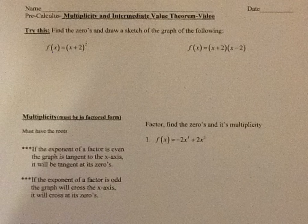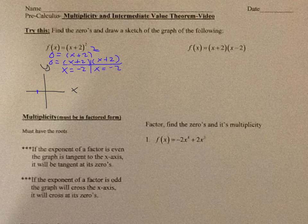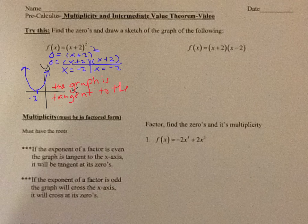It says to find the zeros, so this has to be equal to zero. x plus 2 squared is really 0 equals (x+2)(x+2). When I set them equal to zero, I get x equals negative 2 and x equals negative 2. So notice I have the same exact roots — equal roots. On your graph, at negative 2, it's tangent to the x-axis. There's only one root, only one zero. The graph is tangent to the x-axis.